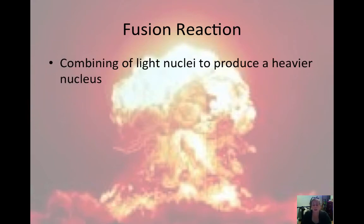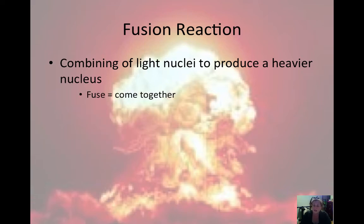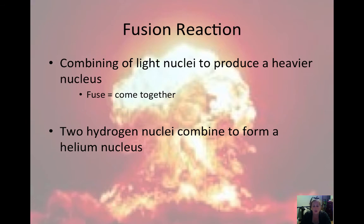Fusion is the other type of nuclear reaction — the combining of light nuclei to produce heavier nuclei. Fusion and fission are very different. Fusion, like the word 'fuse,' is when nuclei are put together or fused, which produces something bigger. Fission is when they're split and something smaller is produced. Two hydrogen nuclei, if they combine, form a helium nucleus — this is what happens in the sun, where two hydrogens are constantly smashing into each other and form helium atoms.